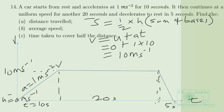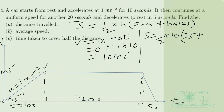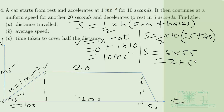The total time is 10 plus 20 plus 5, which equals 35 seconds. So the distance S equals one-half times 10 (the height) times the sum of the parallel sides: 35 plus 20, which gives 5 times 55, equal to 275 meters. That is part (a).